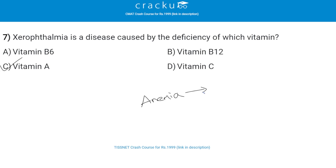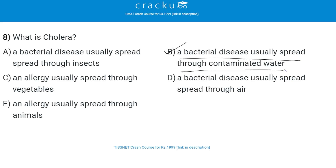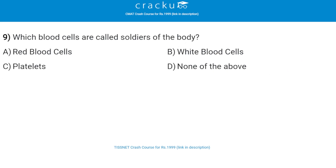Anemia is a disease caused by the deficiency of vitamin B12 and folate. Next, what is cholera? The correct answer is option B — cholera is a bacterial disease usually spread through contaminated water. Next, which blood cells are called soldiers of the body? The correct answer is white blood cells, that is option B. White blood cells are called soldiers of the body.